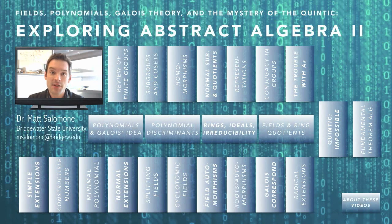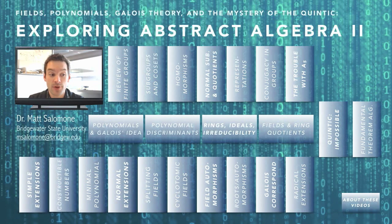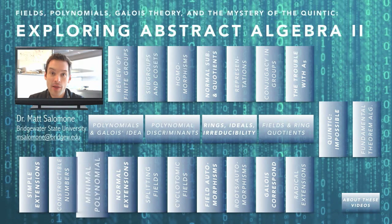Then we'll look at a classical example of a field called the field of constructible numbers that comes from classical questions in geometry. After that we'll talk about minimal polynomials and how polynomials themselves can be used to construct extensions of fields.